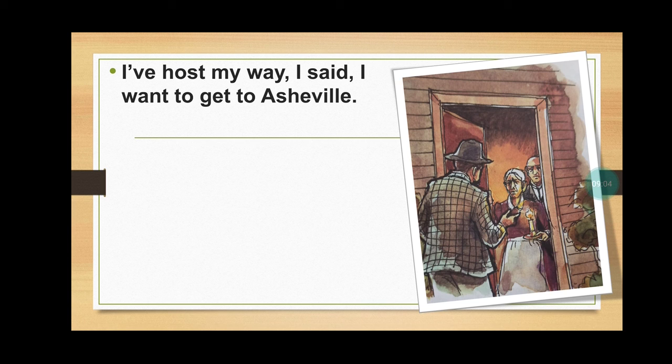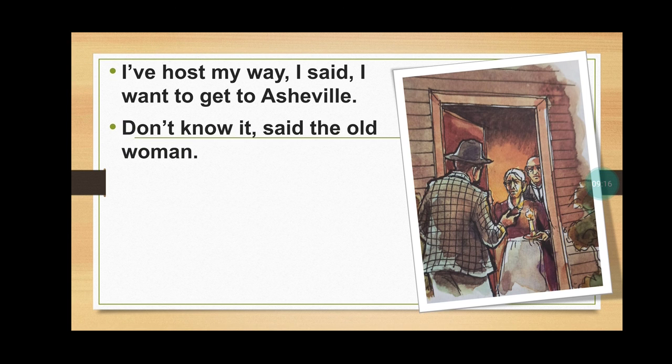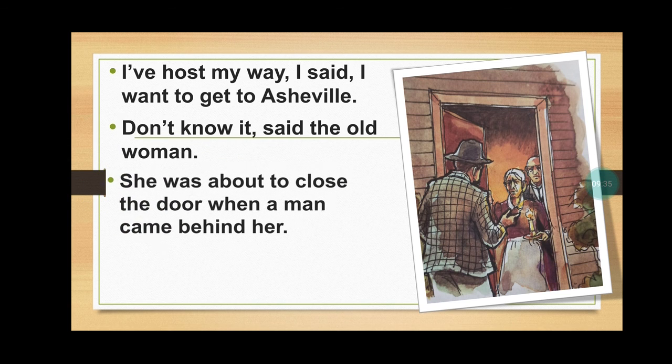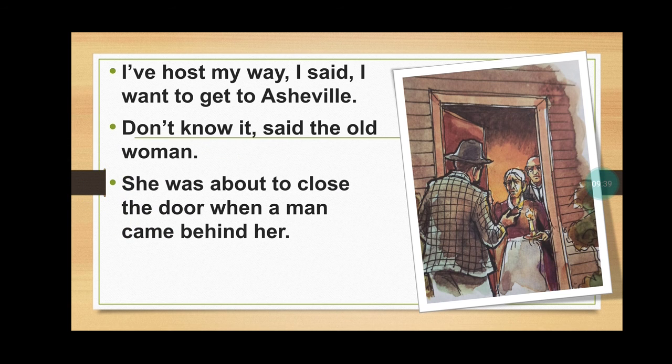"I have lost my way, I said. I want to get to Asheville." Asheville is the place where he came from, and he told the old lady that he had lost his way. "'Don't know it,' said the old woman." That old woman was very rude - she asked rudely and said she didn't know the way to Asheville. She was about to close the door when a man came behind her, as you can see in the picture. Her husband came to answer this man's question.